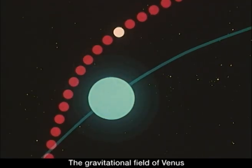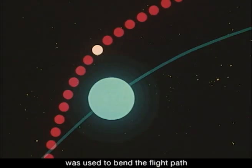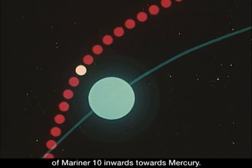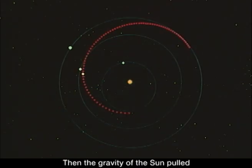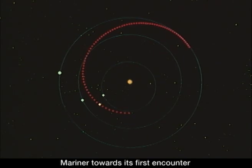The gravitational field of Venus was used to bend the flight path of Mariner 10 inwards towards Mercury. Then the gravity of the Sun pulled Mariner towards its first encounter with the planet.